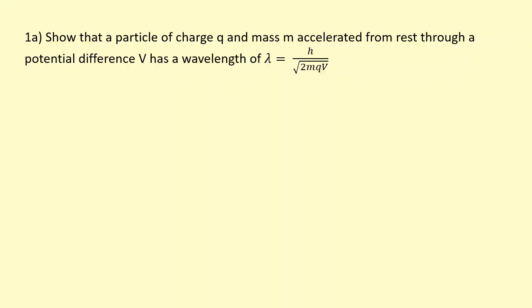In this question, we need to show that a particle with charge q and mass m accelerated from rest through a potential difference V has a wavelength given by this equation here. So firstly, it's being accelerated through a potential difference, so we use the electron gun equation: half mv squared equals the charge times the potential difference.